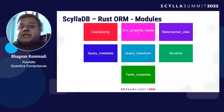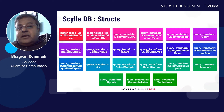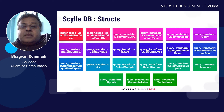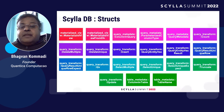The query transform is about transforming a query to get executed within Rust. The structs within ScyllaDB include: materialized view from DB, query metadata, column in query, query parameterized column type, query metadata struct, query transform count, query transform delete multiple, query transform delete unique, query transform insert, query entity vector result, query result unique row, query result unique row expect, query transform select multiple, query transform select unique, query transform select expect, query transform truncate, table name for table metadata, table column in table metadata, and query transform update.